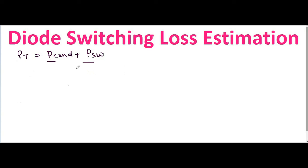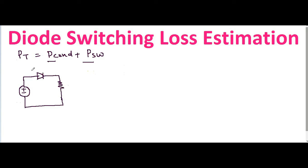In this video we are going to understand how to calculate the diode switching loss. Let me draw a simple circuit here. We have a voltage source with plus and minus, a diode, and a load. The voltage across the diode is VF, and the current flowing through the diode is IF.